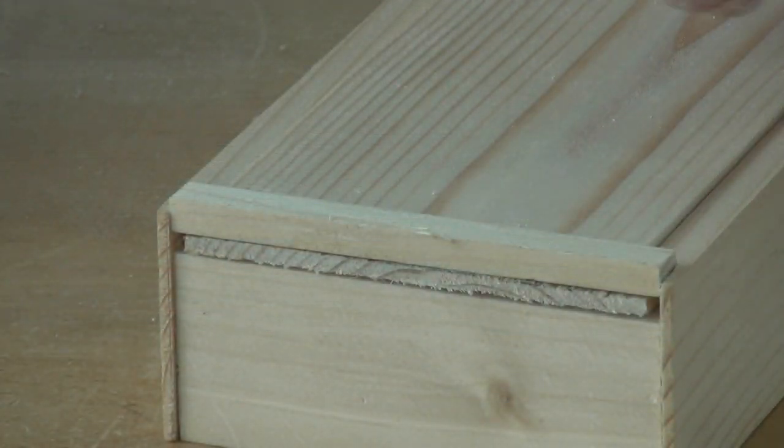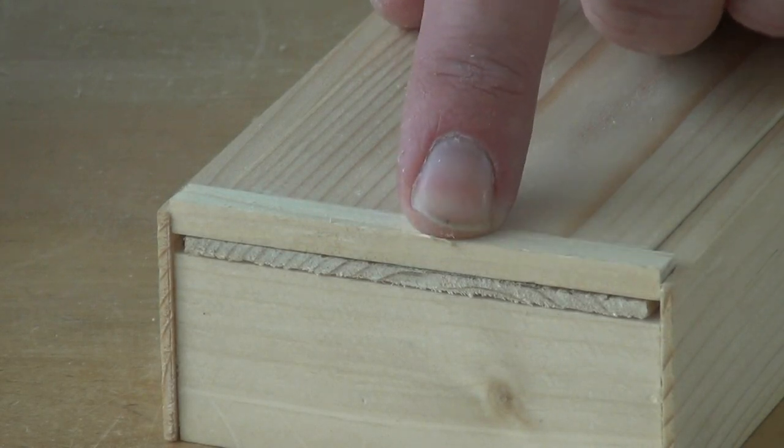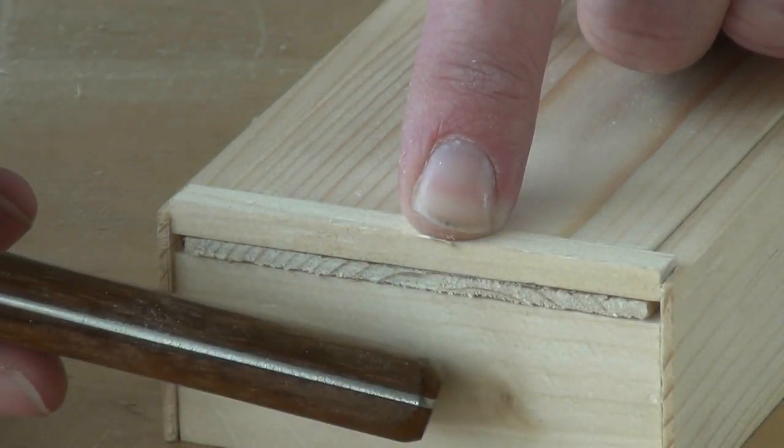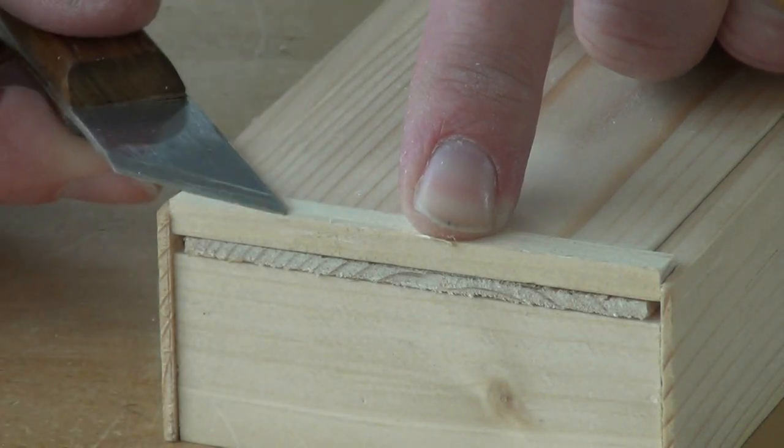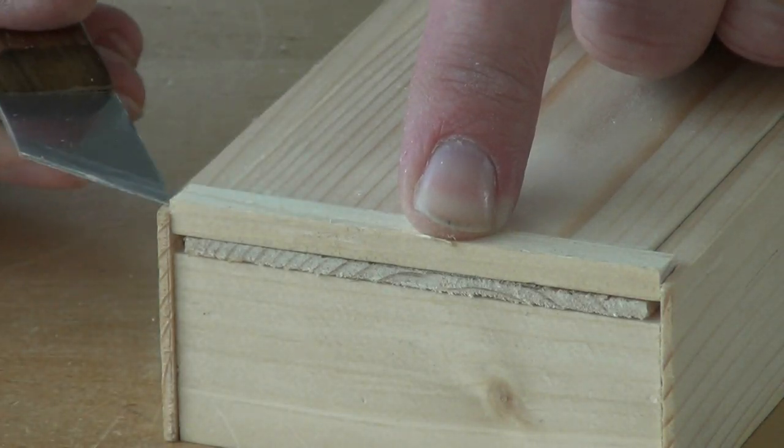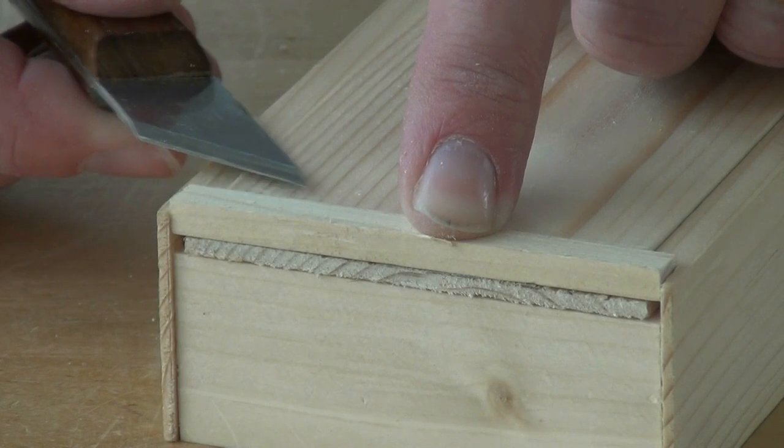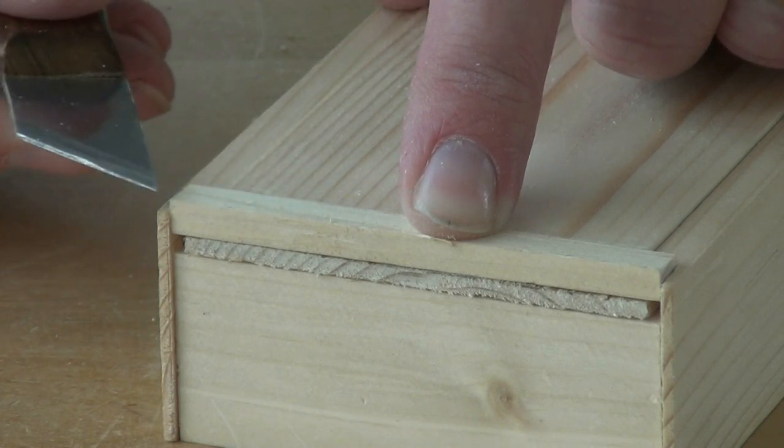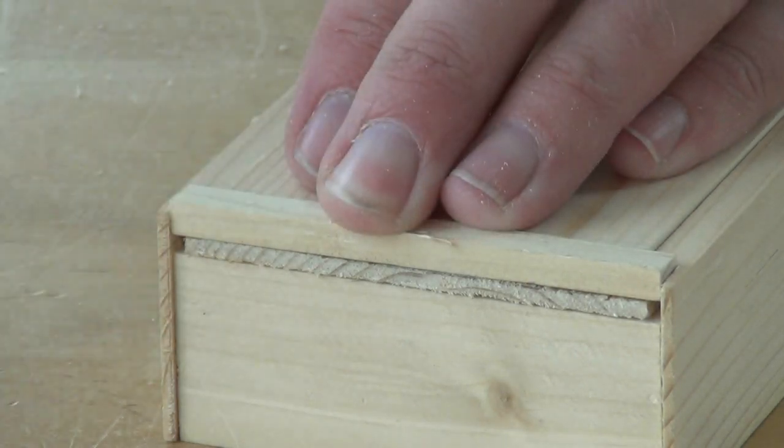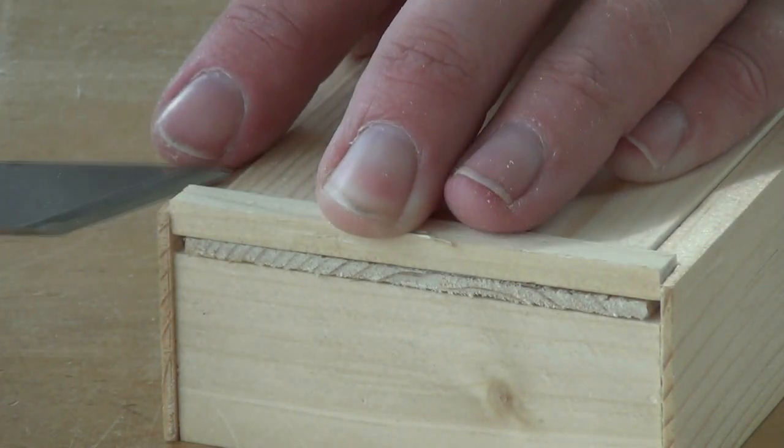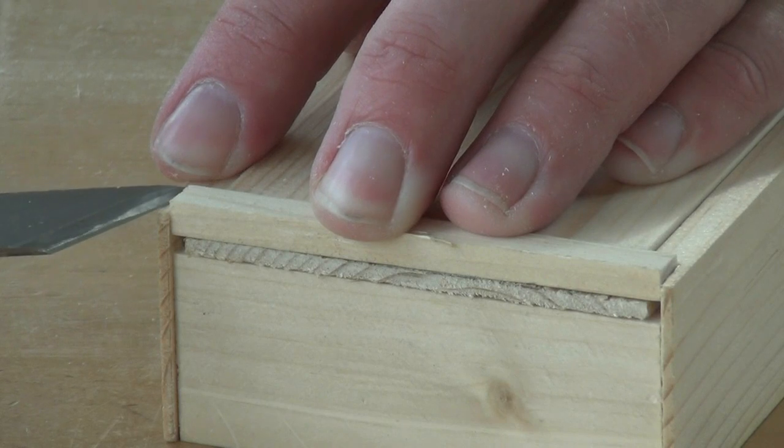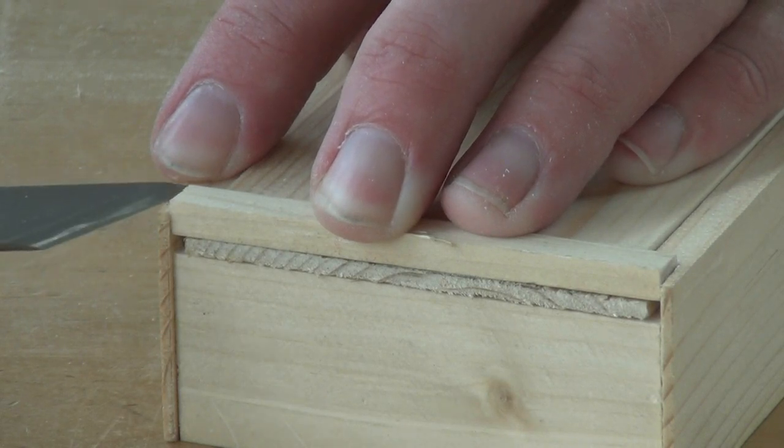At the other end of the box, you can see that this section that we cut off from the top of this end is a little bit too proud. It's higher than the sides and it's higher than the top. So we need to plane it down so it's level with the sides. So I'll start by just marking that with the knife. And that will give me an idea of where I've got to go to.